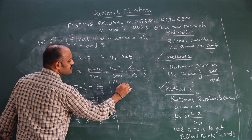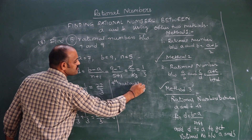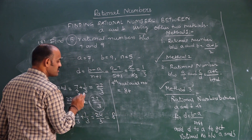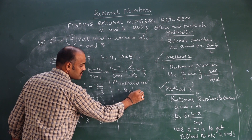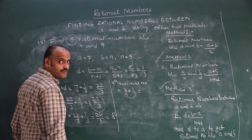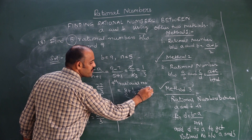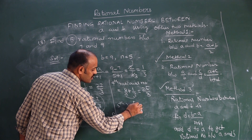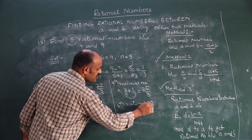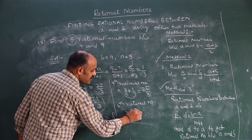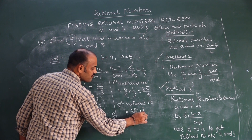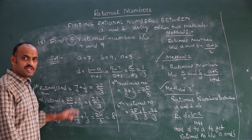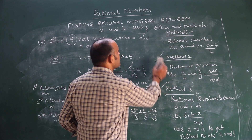The fourth rational number is the previous rational number plus d: 24 by 3 plus 1 by 3 gives 25 by 3. The fifth rational number is 25 by 3 plus 1 by 3, which gives 26 by 3. So these are the 5 rational numbers between 7 and 9.